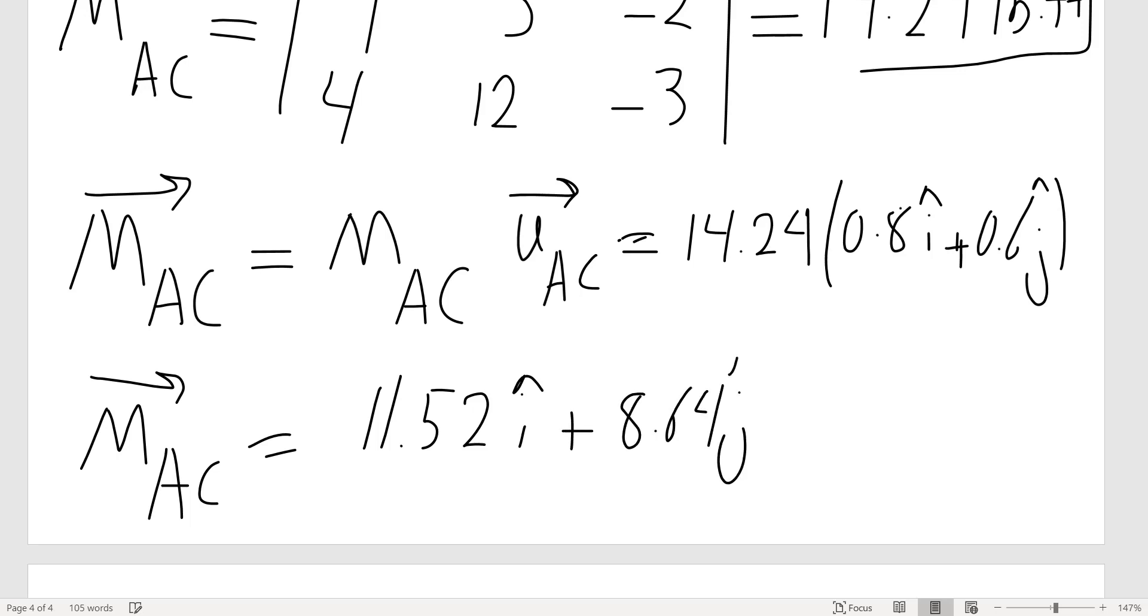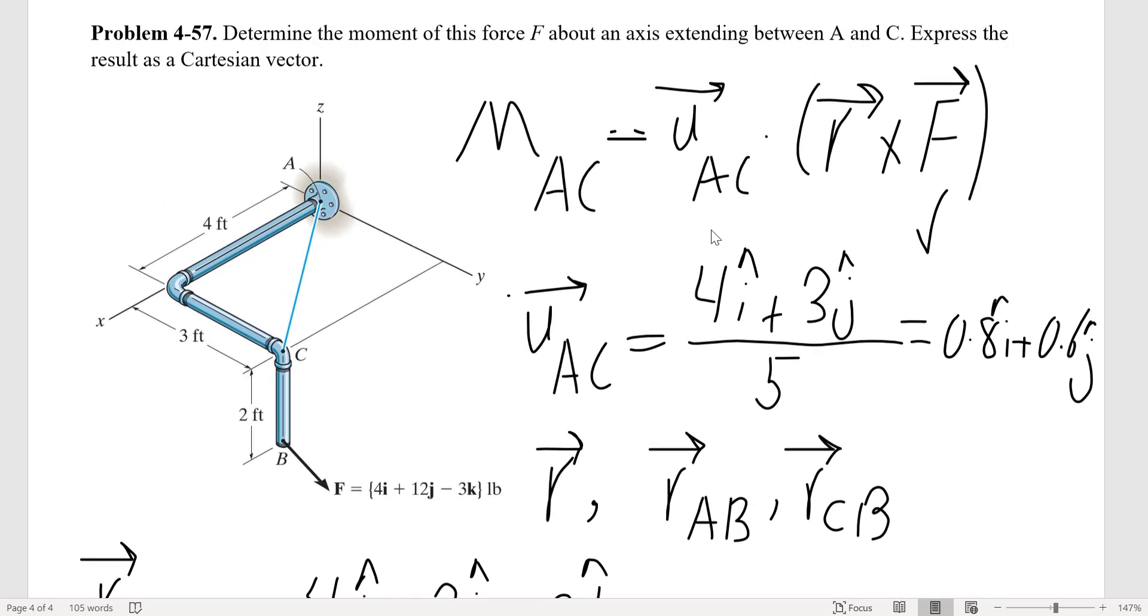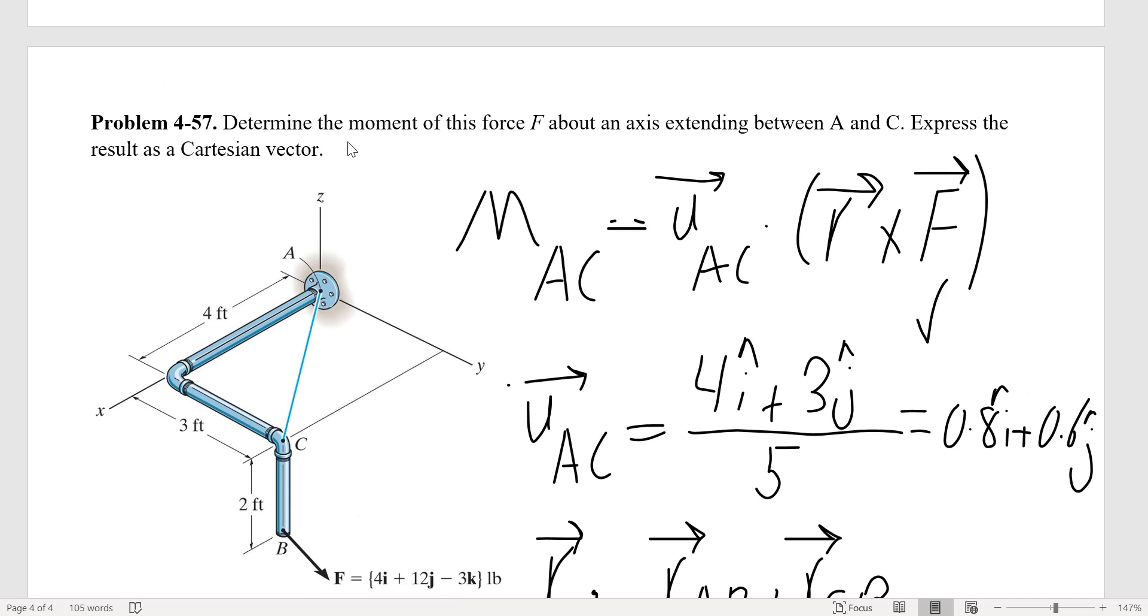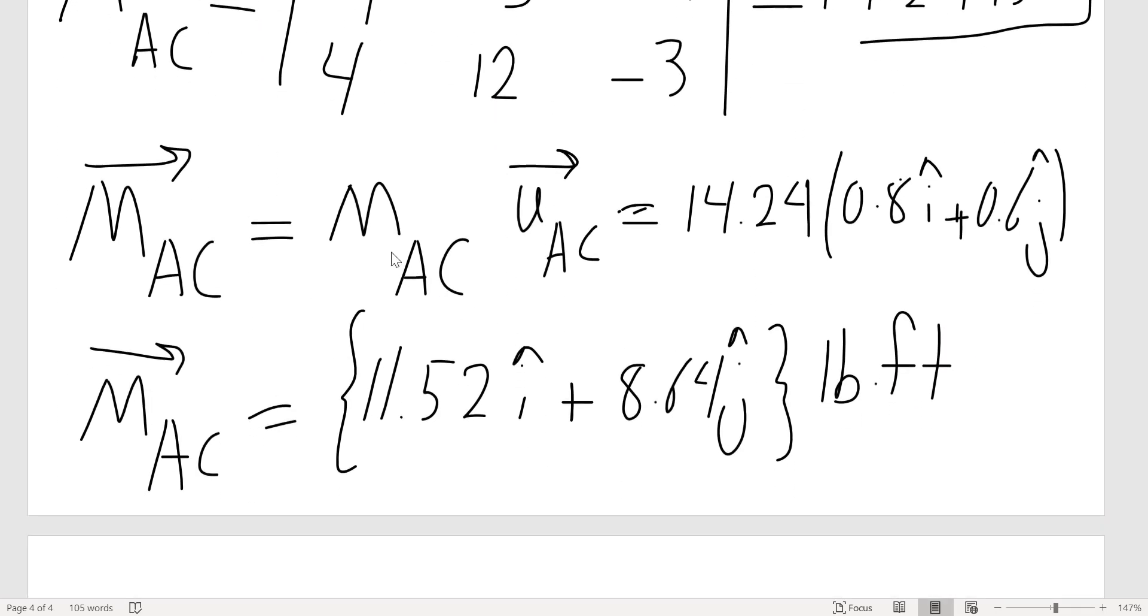So we found the moment about an axis in vector form, pound-feet. The problem is saying 'determine the moment of this force' - it doesn't just say the magnitude, but it says 'express the result as a Cartesian vector.' That's why we have to do this extra step and multiply by the unit vector to get the Cartesian form of our answer.